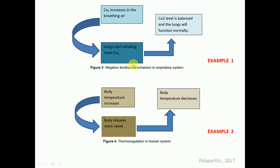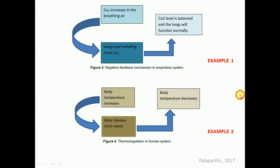Here you can see these examples in diagrammatic form. An increase in carbon dioxide in the breathing air stimulates the lungs to exhale more and more carbon dioxide, ultimately reducing CO2 levels and restoring proper lung functioning. If the core body temperature increases, it sends a message to receptors in the skin and hypothalamus, which in turn signal the sweat glands to release more sweat, causing body temperature to decrease.